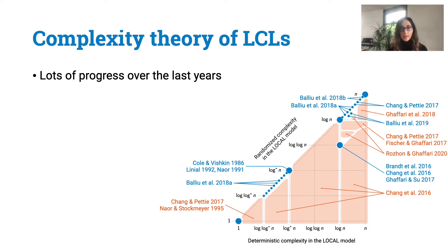LCLs have been studied extensively in the last years and there has been lots of progress in establishing a complexity theory for these problems. In particular, we know that some complexities are not possible at all. For example, in this picture the orange regions depict complexity gaps. This orange region represents the fact that there are no LCLs with complexity that is at the same time little omega of 1 and little o of log log star n, neither for deterministic nor for randomized algorithms.